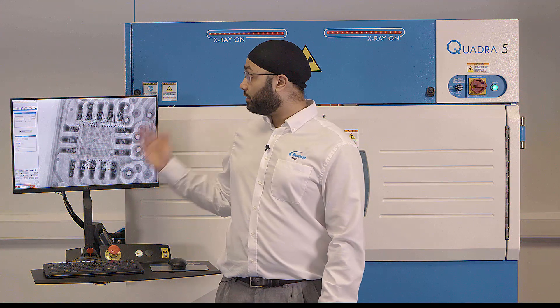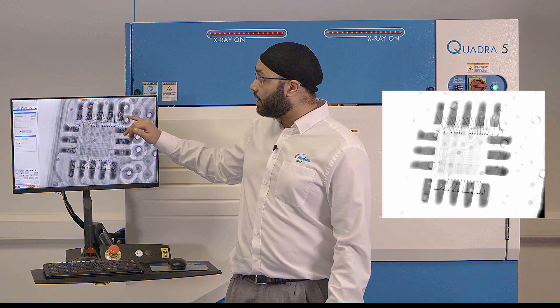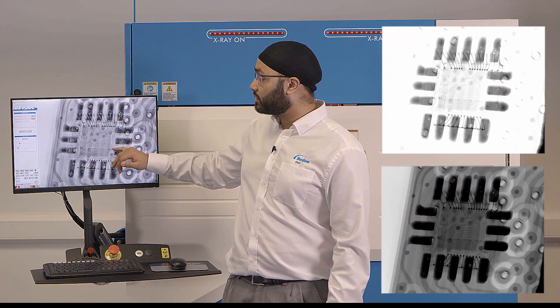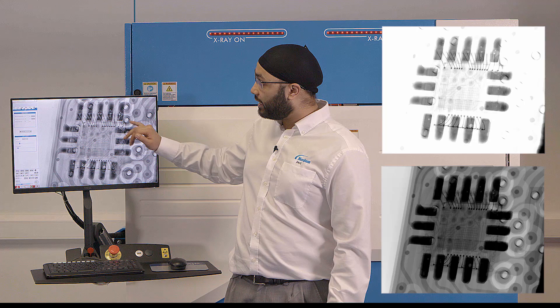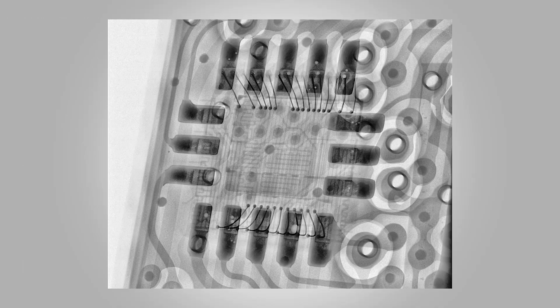Here we see another great example of HDR. On this QFN package we see voids in the solder pads and also we see the tracks to the PCB and you can quite clearly see all the layers to this device.